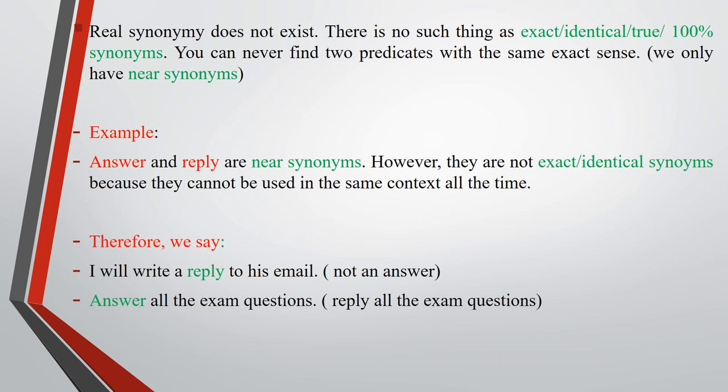It is noteworthy that real synonymy does not exist, which means that there is no such thing as exact, identical, true, 100% synonyms. We can never find two predicates with the same exact sense. We only have near synonyms, meaning we cannot find two predicates which have 100% the same meaning — there should be some difference between them. For example, the predicates 'answer' and 'reply' are near synonyms, but not exact synonyms, because they cannot be used in the same context all the time.